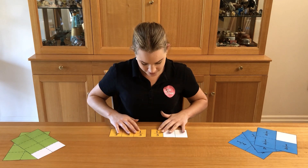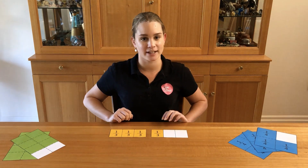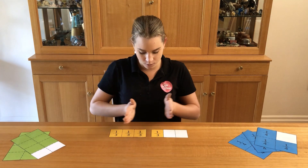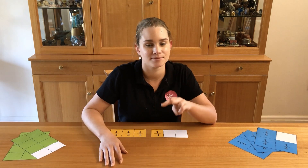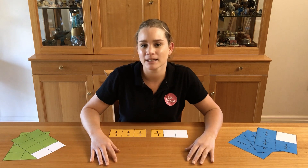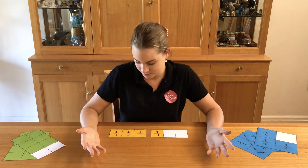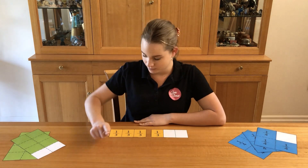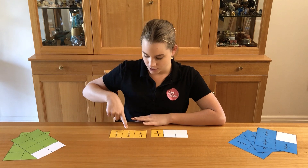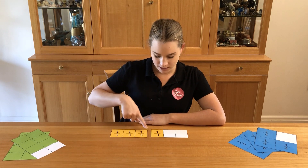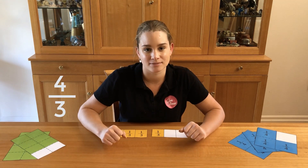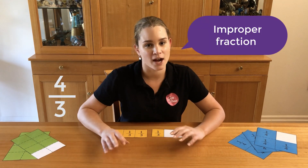Here I have two rectangles. These rectangles are one whole each and they have been divided up in three equal parts. How many equal parts have been coloured? Let's have a look. We've got one third, two thirds, three thirds and four thirds. Four thirds have been coloured. This is an improper fraction.